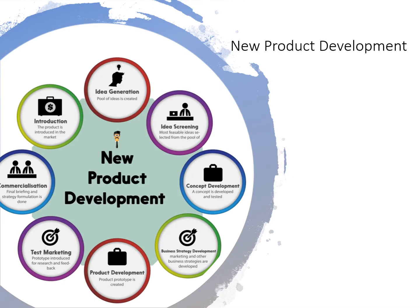All new product development needs to go through key phases. First, idea generation — the idea needs to be screened and the most viable idea is selected from the pool. Third is concept development — the concept of the product is developed and tested. Fourth is business strategy development — marketing and other business strategies are developed. Fifth is product development — the prototype is created and introduced to the market. Last is commercialization — final briefing and strategy formulation are done and the product is introduced in the marketplace.